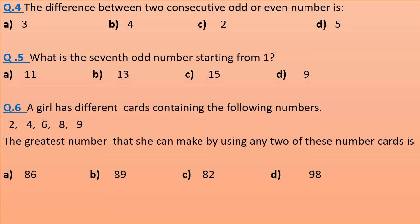Question 6: A girl has different cards containing the following numbers: 2, 4, 6, 8, 9. The greatest number that she can make by using any two of these number cards is? Now, cards with different numbers are given. You have to find the greatest number that she can make by using any of these two number cards.